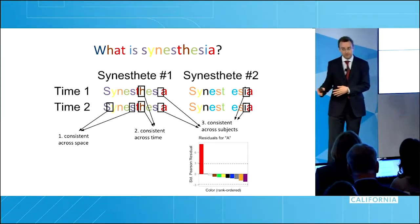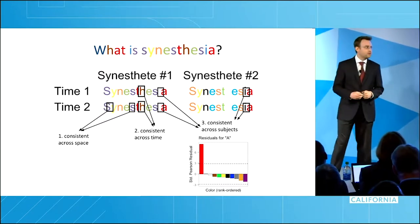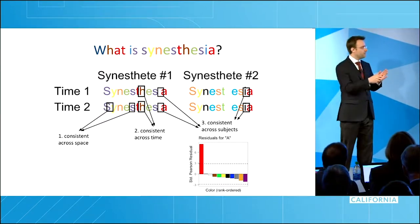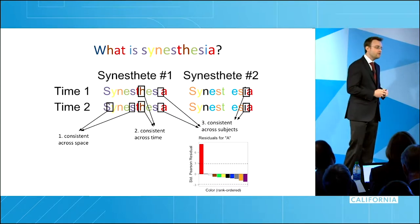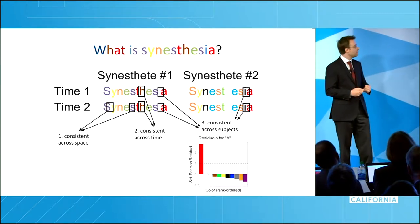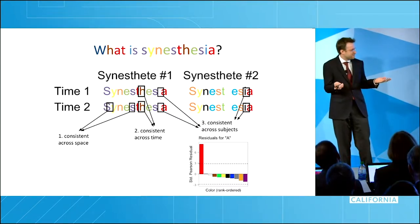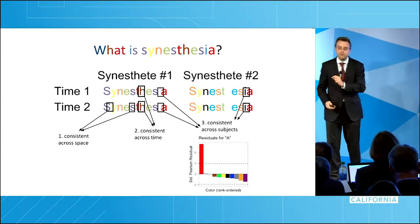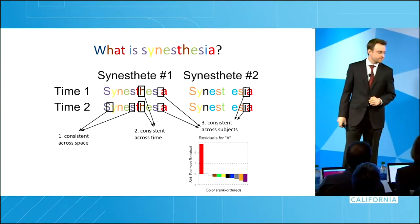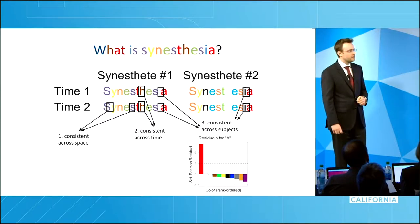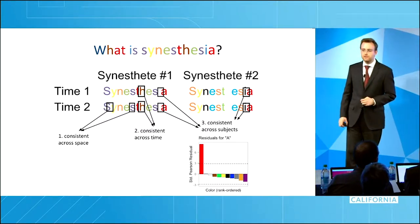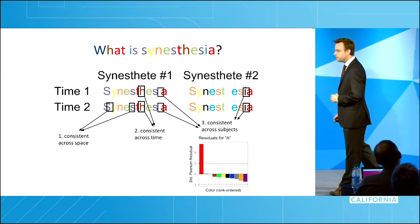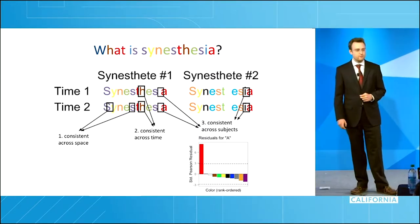By consistent, I mean a few things. Consistent across space — so if your S is purple here, it's purple there. Consistent across time — so if your H is burnt sepia today, it'll be the same burnt sepia in two years. Finally, intriguingly, consistent across people. For example, most synesthetes say that the letter A is red.